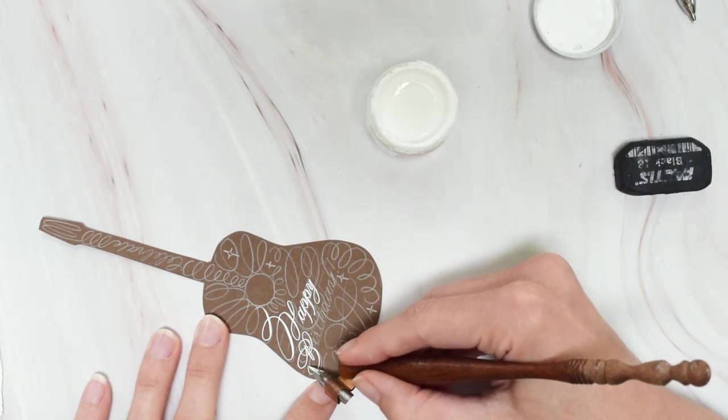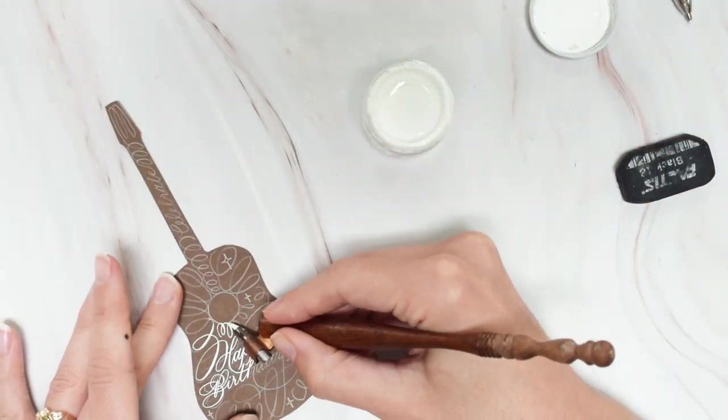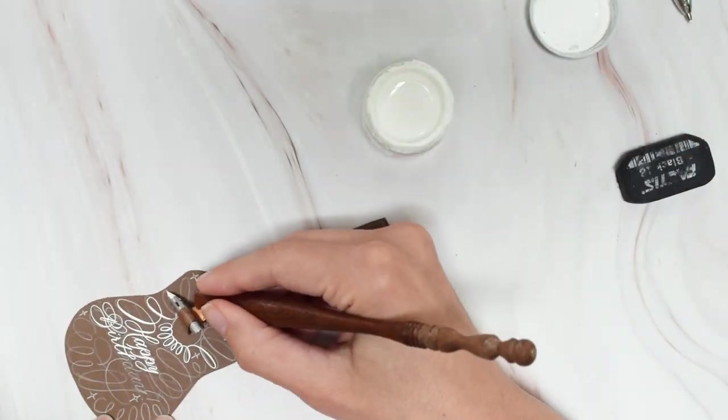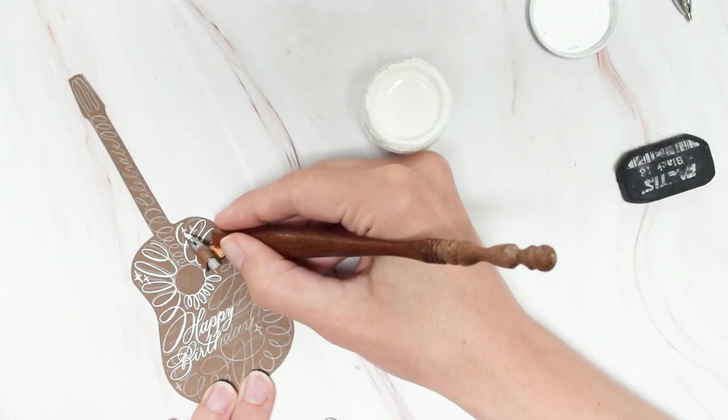Now I'm using Dr. PH Martin's bleed proof white ink because it shows up really nicely on darker papers, but you could use a gouache, you could use a Finetec metallic, just whatever you're feeling.